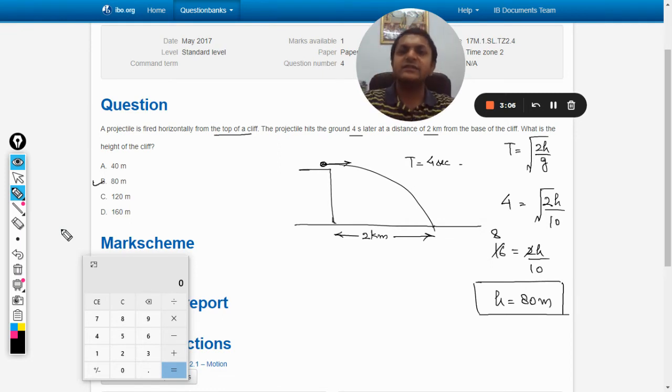In this question, as we can see, the data given is more than what is actually required. This is done generally to confuse students, so don't get confused. Range is a completely different thing. As far as the time of flight is concerned, it is based only on one thing: the height of the building. It is independent of velocity.